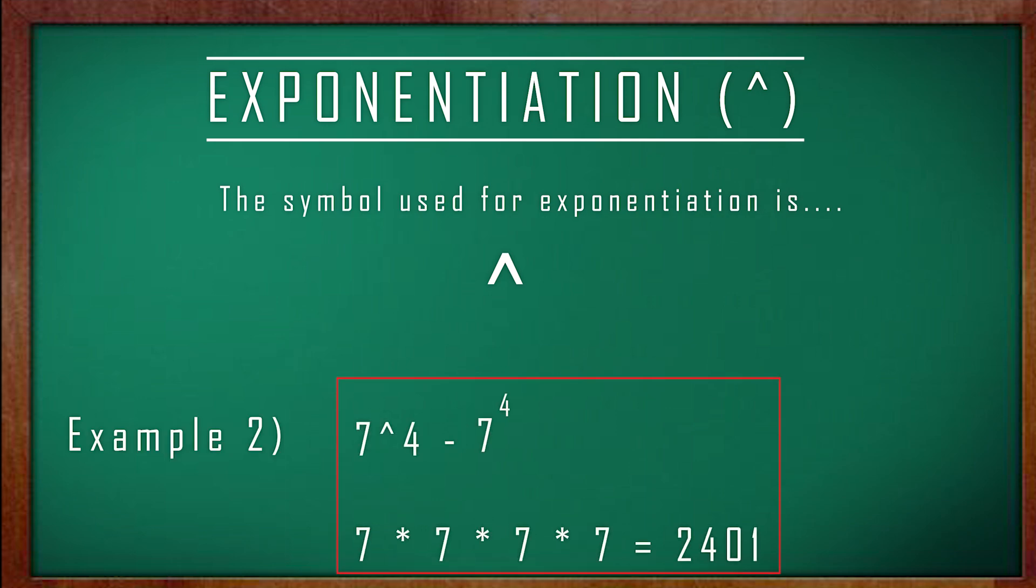Here in our second example, our base number is 7 and our exponent is 4. So we multiply 7 by itself 4 times, giving us the answer 2401.